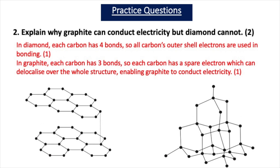Question two asks you to explain why graphite can conduct electricity but diamond cannot. In diamond, each carbon has four bonds, so all outer shell electrons are used in bonding — there are no spare electrons, so diamond cannot conduct. In graphite, each carbon has three bonds, so each carbon has a spare electron which can delocalise over the whole structure, enabling graphite to conduct electricity.